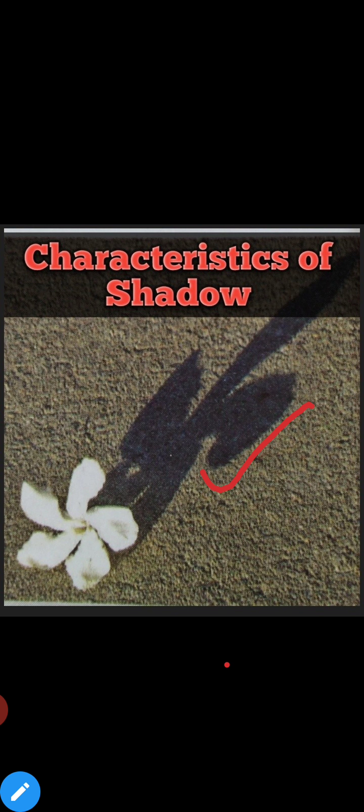जो source of light है, उसकी position क्या है opaque object के respect में — तो इससे size increase करेगा या decrease करेगा। अगर source of light closer है opaque object के, जैसे flower, तो shadow की size बड़ी होगी। But जब source of light दूर होगा opaque object से, तो shadow छोटी होगी।